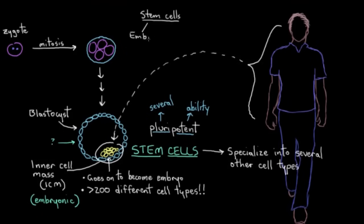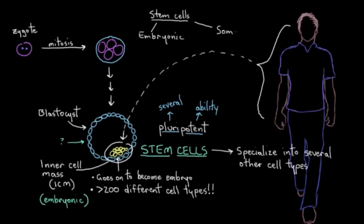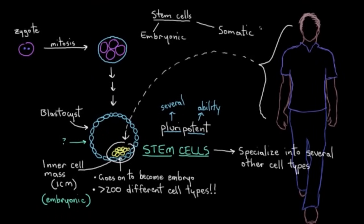Embryonic stem cells that we just saw, and somatic stem cells, which are found in every person. So the embryonic stem cells are used to build our bodies, to go from one cell to trillions of specialized cells.